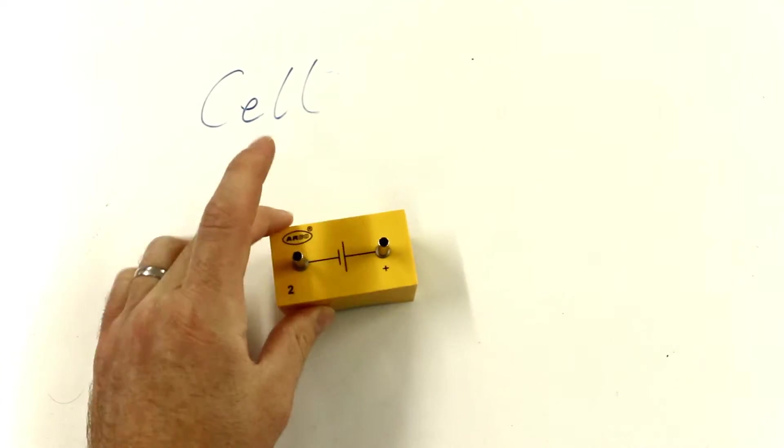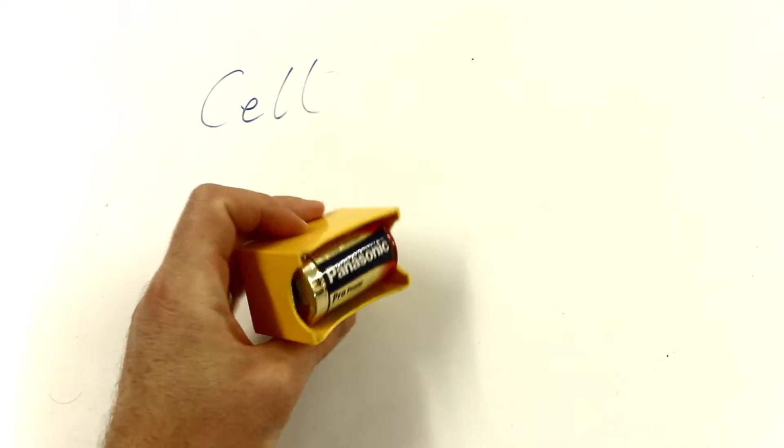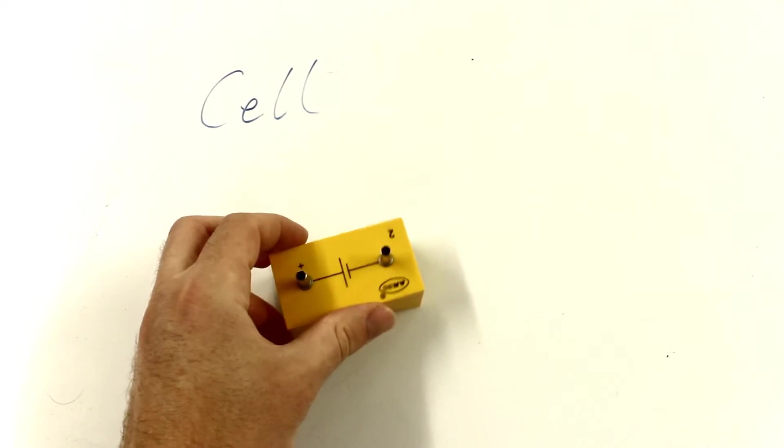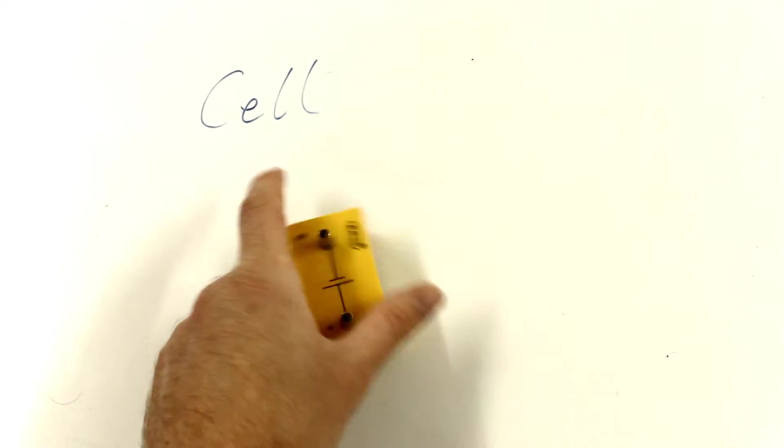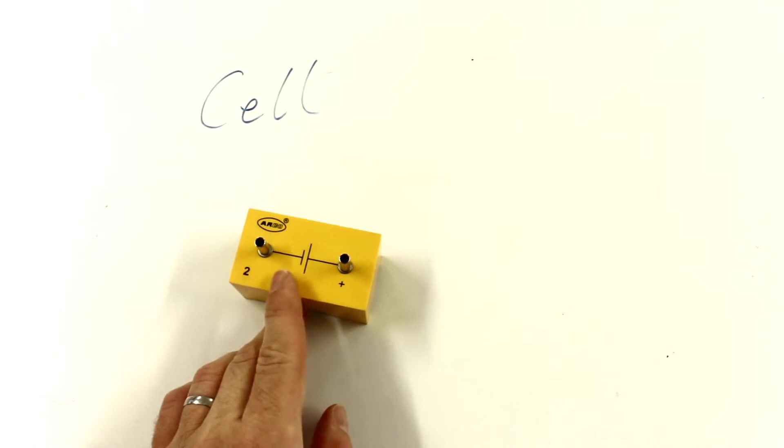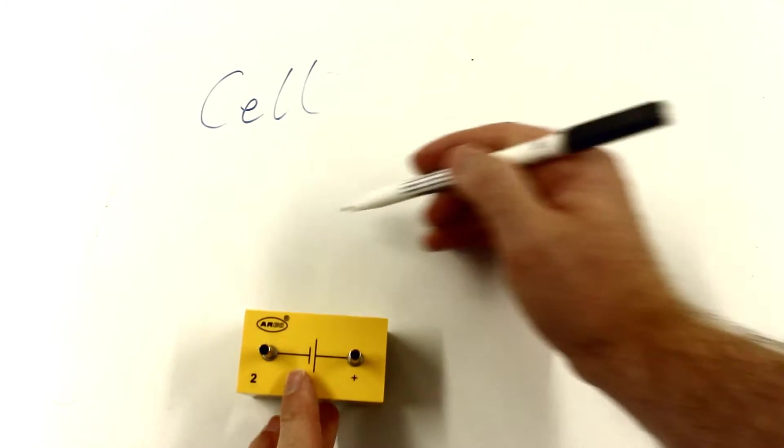So this here, this is a cell. It is just a, you'd probably call it a battery, it's a 1.5 volt cell. And it actually, these school ones come with the two points for the wires and they also have the symbol on it.